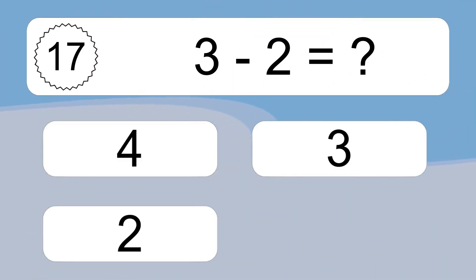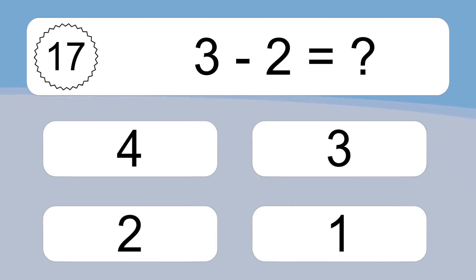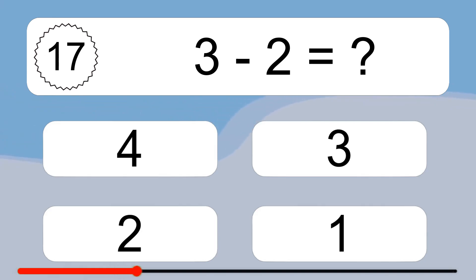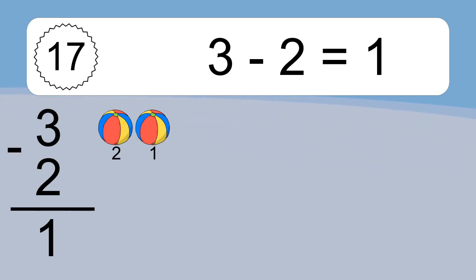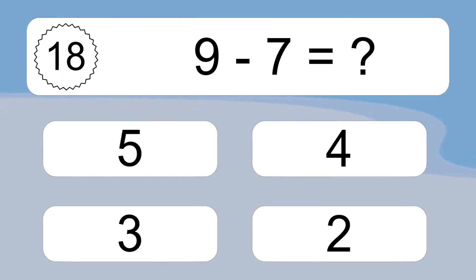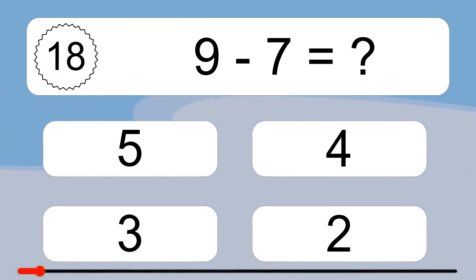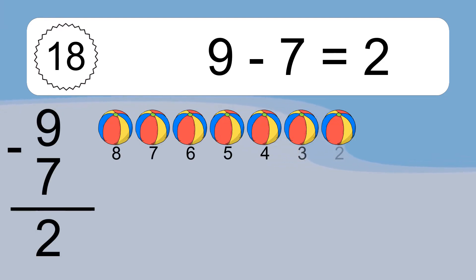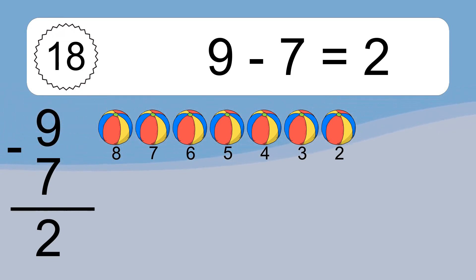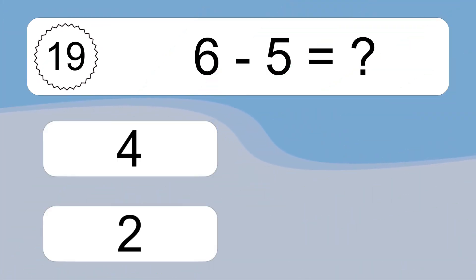3 minus 2 equals what? 3 minus 2 equals 1. Let's count it. 2, 1. 9 minus 7 equals what? 9 minus 7 equals 2. Let's count it. 7, 6, 5, 4, 3, 2.